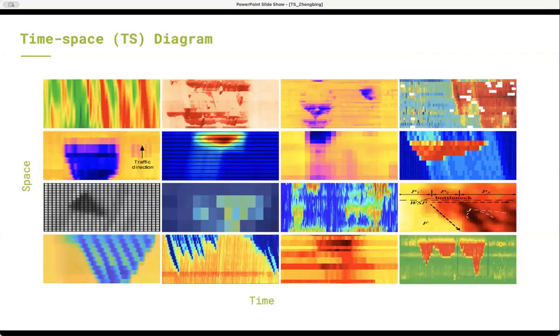Time-space diagram is one of the most important transportation visualization and literacy tools. In the time-space diagram, x-axis is time, y-axis is space, and the colors represent traffic states, usually speed.